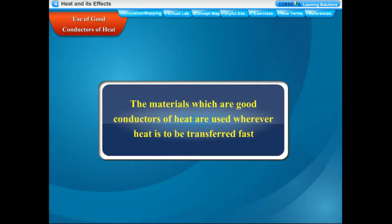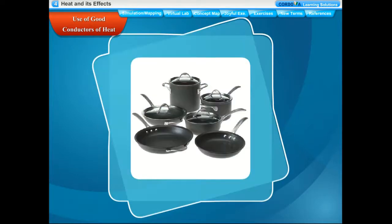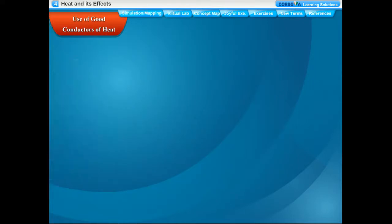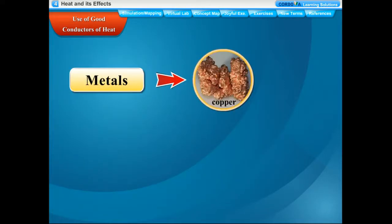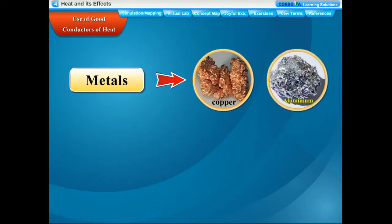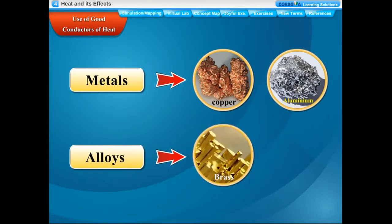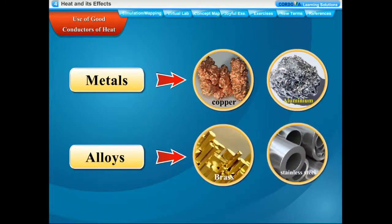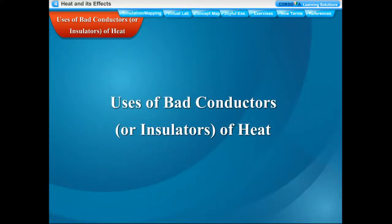Good conductors of heat are used wherever heat is to be transferred fast. For example, cooking utensils are usually made of metals like copper and aluminium, and alloys like brass and stainless steel, because they are good conductors of heat.